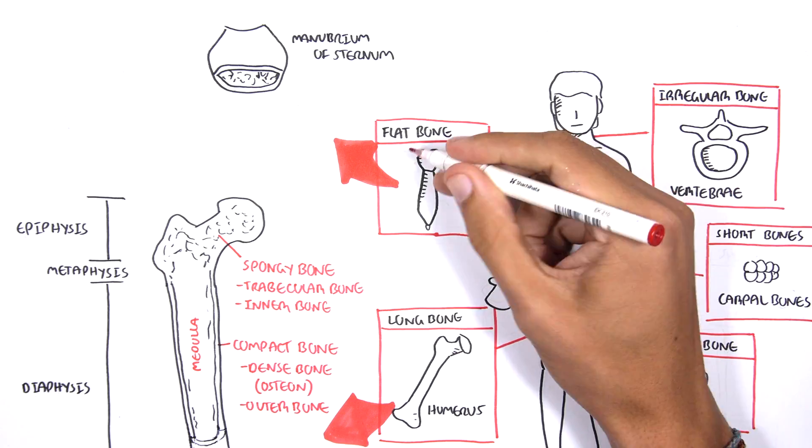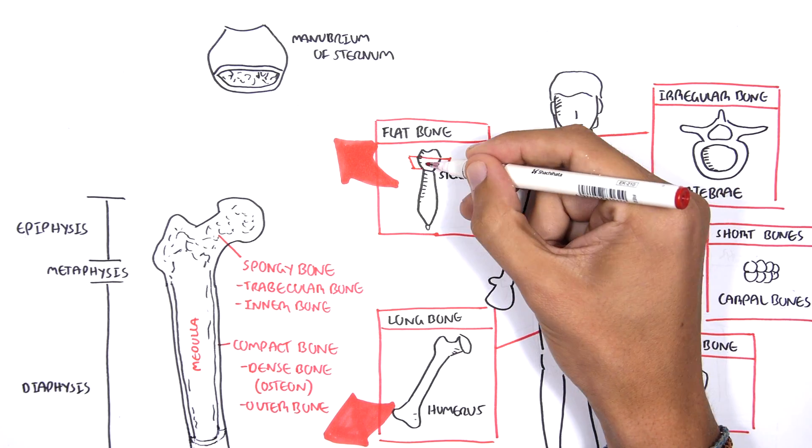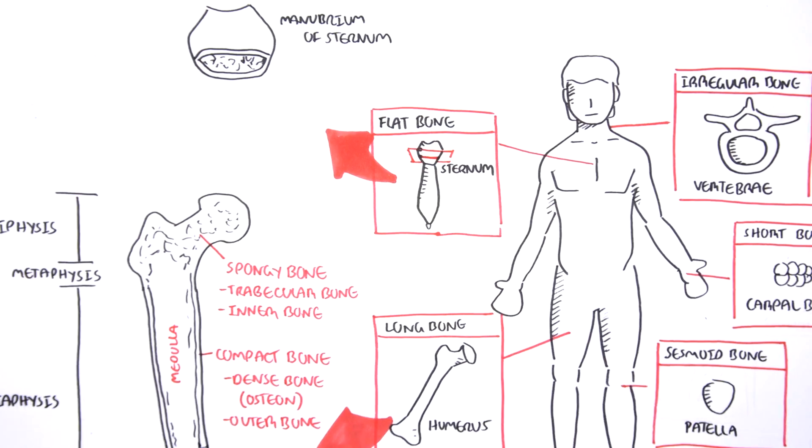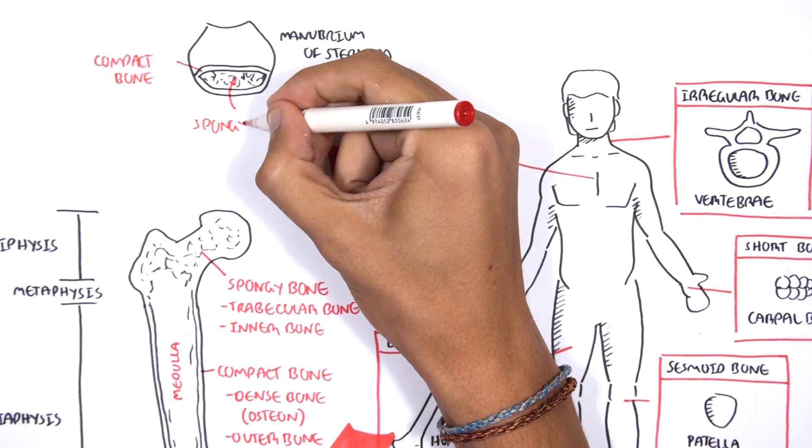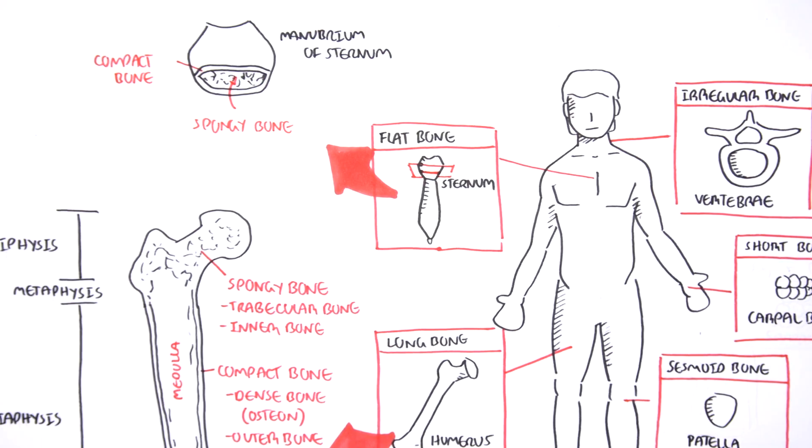Just like the long bone, the outside is the compact bone, the hard one. And the center, the inside of the bone, is the spongy bone, which is the trabecular bone.